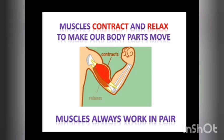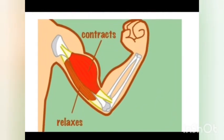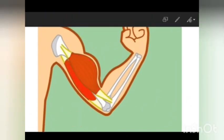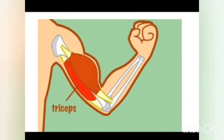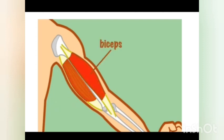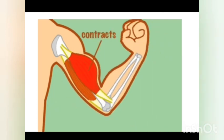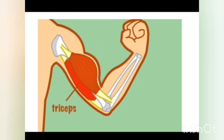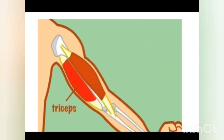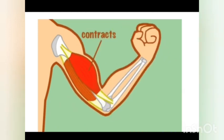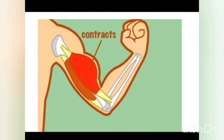See this picture which shows you the movement of the hand. There are two muscles which control this movement. First is the biceps and second is the triceps. These muscles contract and relax to cause the movement.